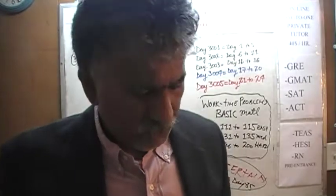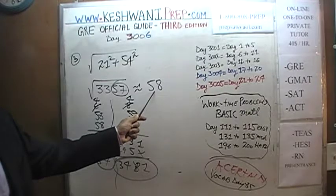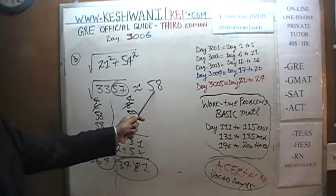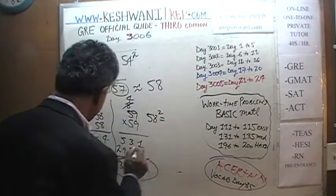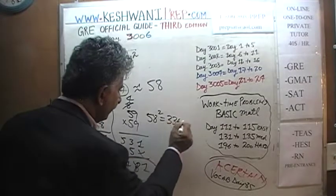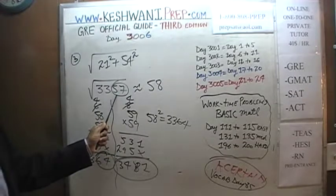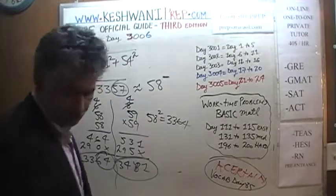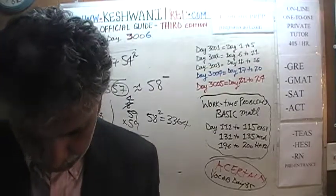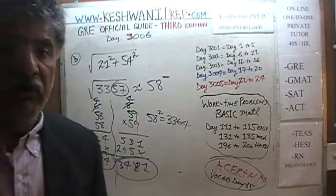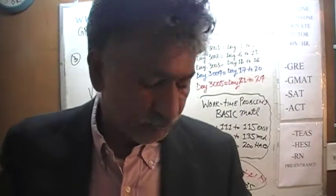We are taking the exam — pick the answer choice that comes closest to 58. Are we underestimating or overestimating? 58 squared is exactly 3364. We only have 3357, so we are overestimating. The answer is going to be slightly under 58. And as I am looking at the book, it tells me it's 57.94. If something is 57.94 and you claim it's approximately 58, that's good enough.